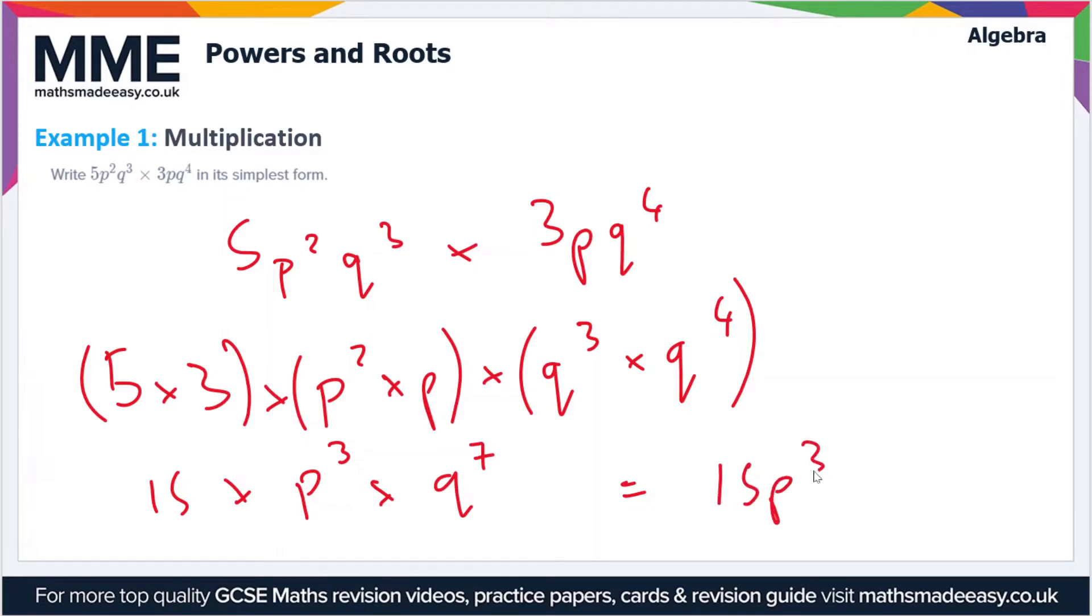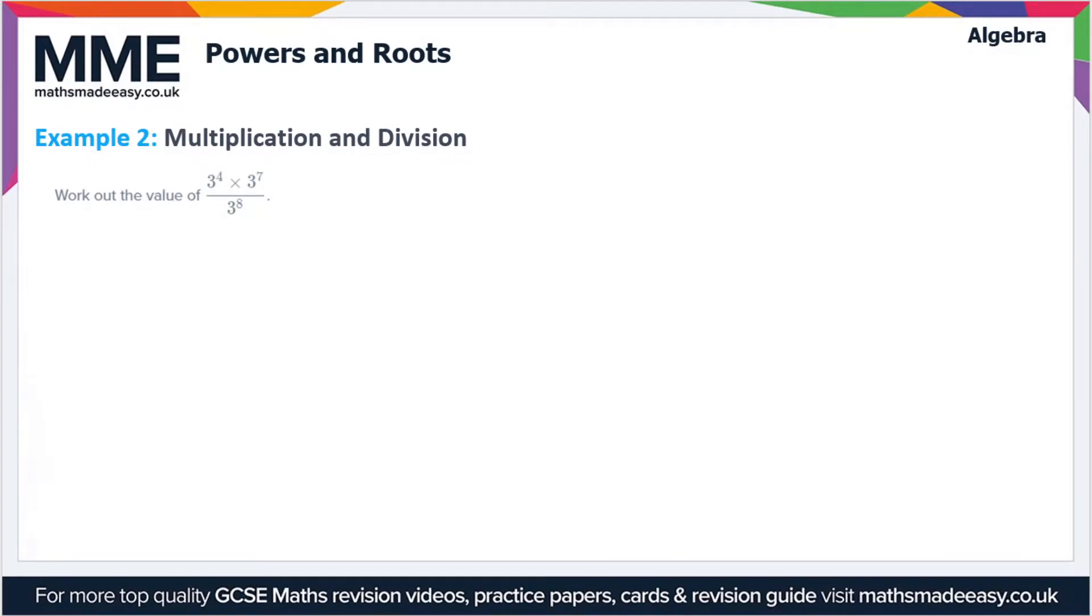Moving on, let's have a look at another example. This time we have a multiplication and a division. We have to work out the value of 3⁴ times 3⁷ over 3⁸. I'm just going to rewrite the expression down here: 3⁴ times 3⁷ over 3⁸.